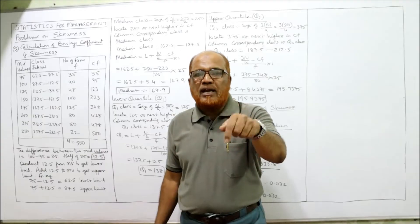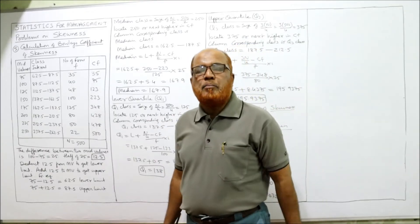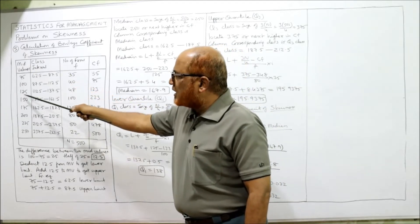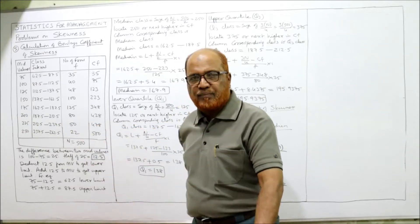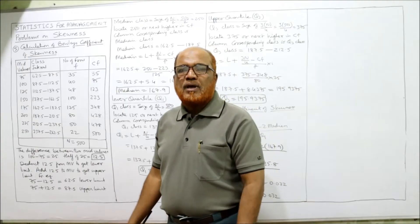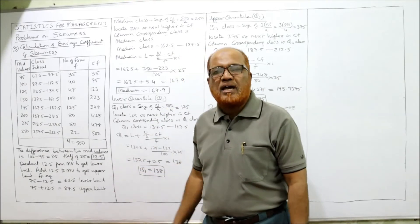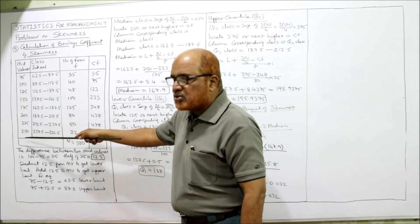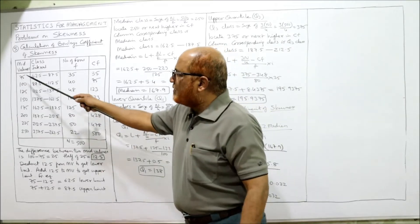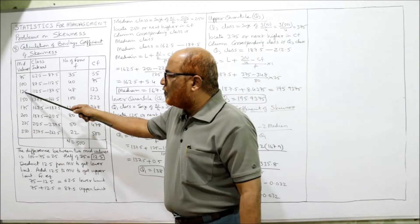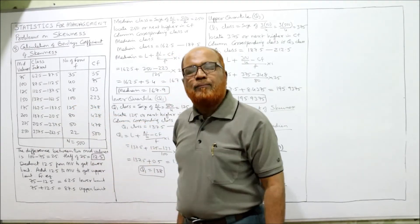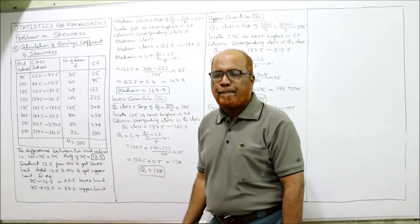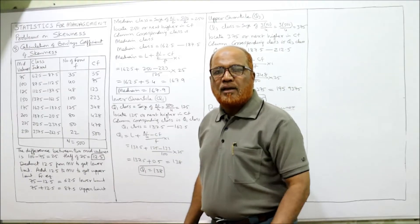We've done this conversion before in measures of central tendency. The mid values given are: 75, 100, 125, 150, 175, 200, 225, 250. To convert mid values into class intervals, observe that the difference between consecutive mid values is 25 — for example, 75 to 100 is 25, 100 to 125 is 25, and so on.